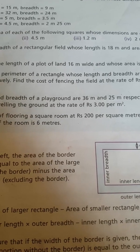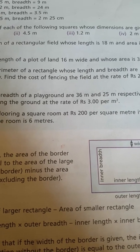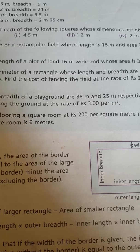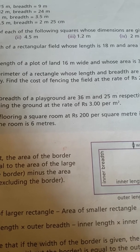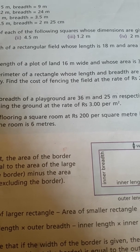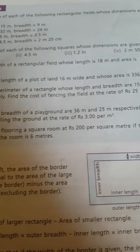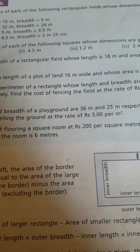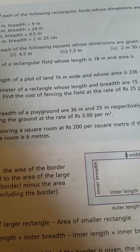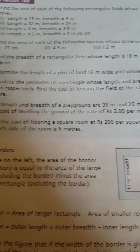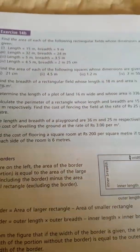To level the ground, you level the surface, so you need to find the area. In the previous question you did the boundary, which is the perimeter. In this question you have to work with the area — the surface. The formula for area is length multiplied by breadth, which is 36 multiplied by 25. Then by multiplying that area with the rate per meter square, you get the cost of leveling the ground.